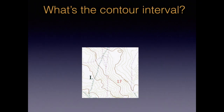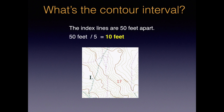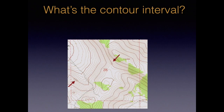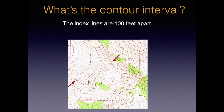What's the contour interval here? The index lines are 50 feet apart and dividing 50 by 5 gives us an interval of 10 feet. What's the contour interval on this map? The index lines are 100 feet apart and dividing 100 by 5 gives us an interval of 20 feet.